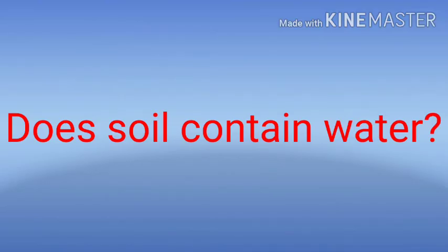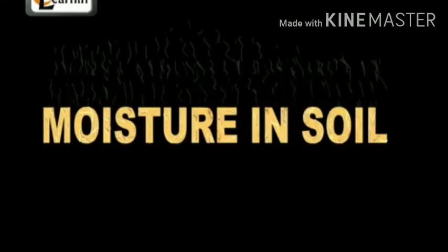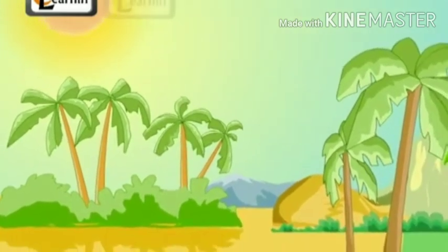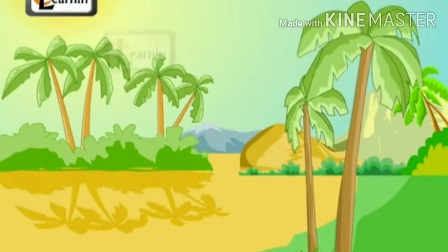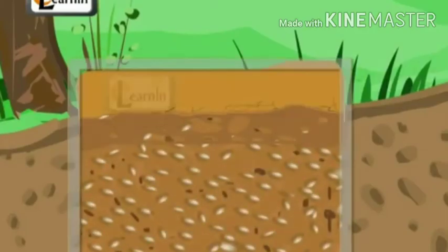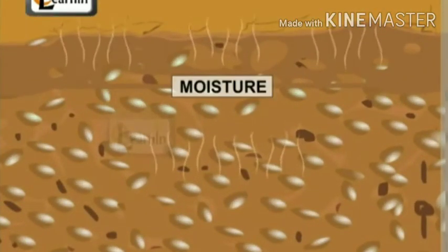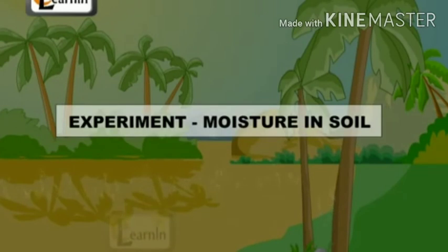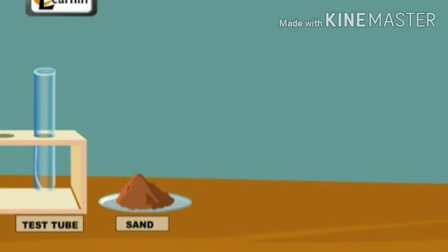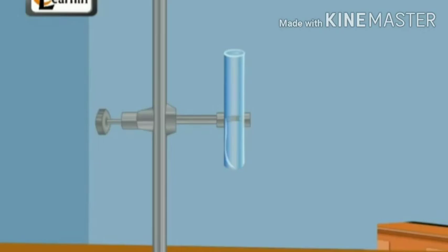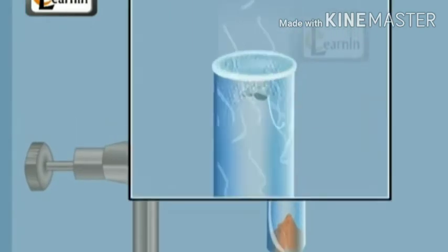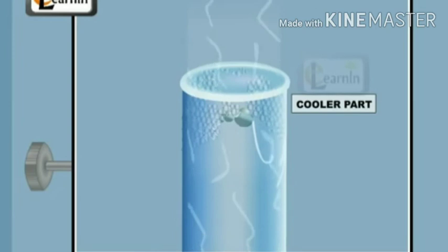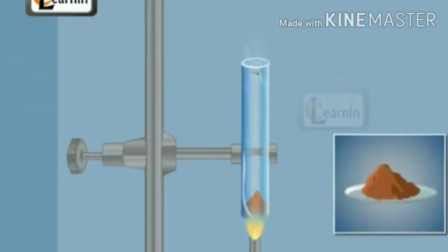Now we will check: does soil contain water? For this experiment, the materials needed are a test tube, sand, a burner, and a test tube stand. We put some soil in the test tube and heat it. After some time, you can see on the upper side of the test tube some water particles, which indicates that soil contains water.